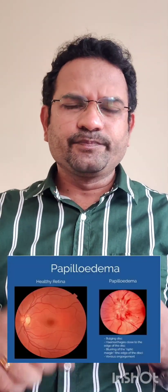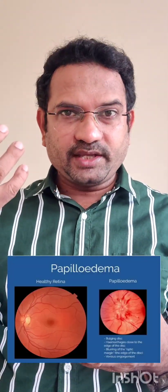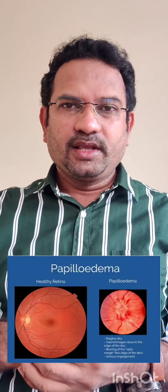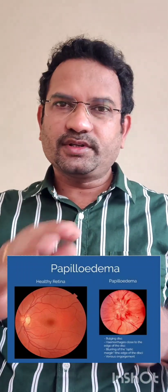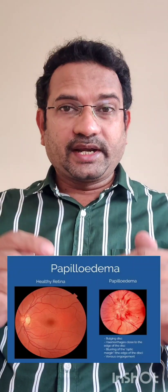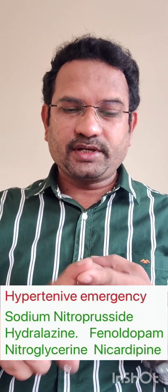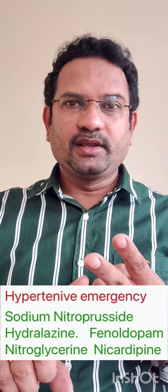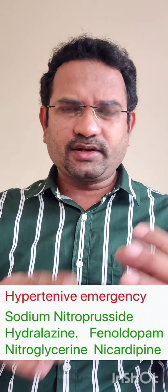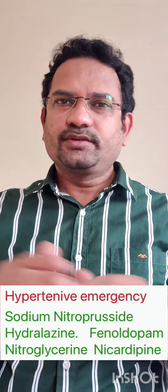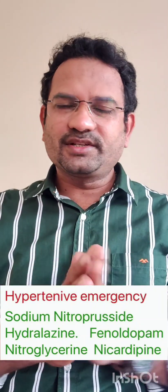The most commonly affected organs in malignant hypertension are brain, heart, kidney, and even the eyes. There is a condition called papilloedema — redness of the eye — which occurs due to malignant hypertension. To treat this severe hypertensive crisis, intravenous sodium nitroprusside, nitroglycerin, nifedipine, and phenoldopam are used — all of these are vasodilators.